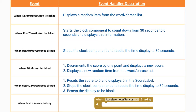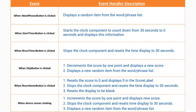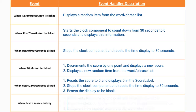When our device senses that it's being shaken, the first thing that has to happen is that we need to increment the score by one point and display a new score. For our second item, we'll need to stop the clock component and reset the time display back to 30 seconds. And last but not least, we're going to need to display a new random item from the word phrase list. This is our event handler chart that we will be using to decompose our charades game app.